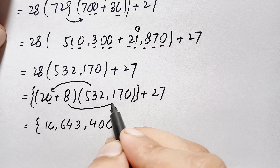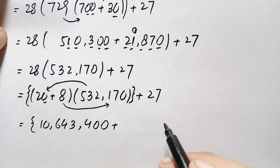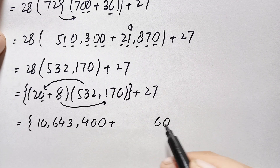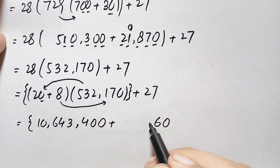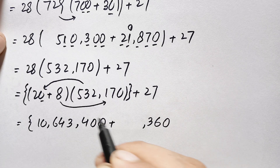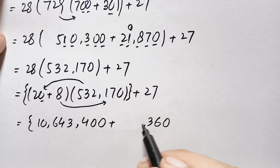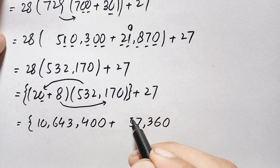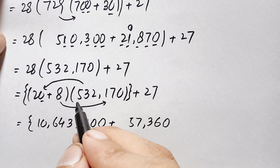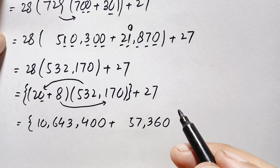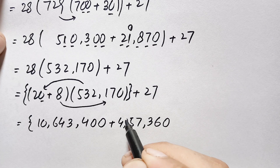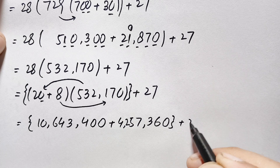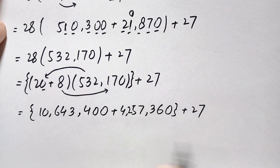Now multiplying 532,170 by 8: 8 times 0 is 0, 8 times 7 is 56 carry 5, 8 times 1 is 8 plus 5 is 13 carry 1, 8 times 2 is 16 plus 1 is 17 carry 1, 8 times 3 is 24 plus 1 is 25 carry 2, 8 times 5 is 40 plus 2 is 42, giving 4,257,360.